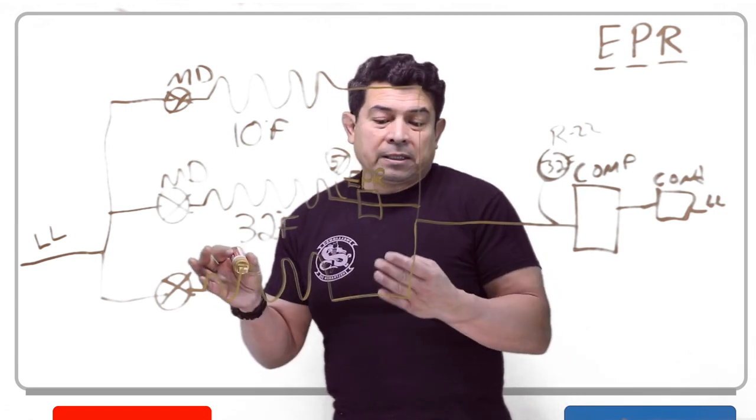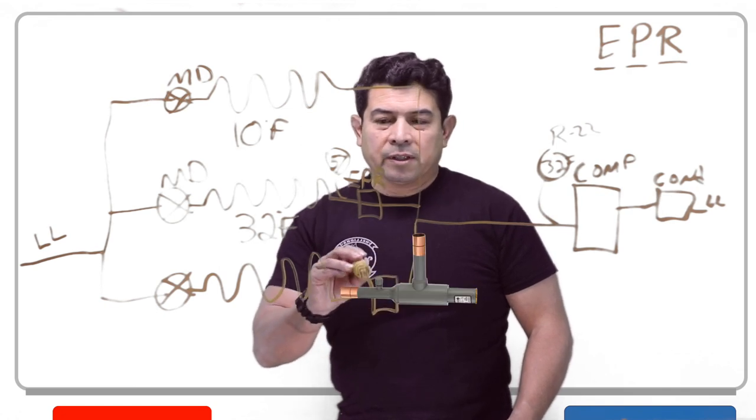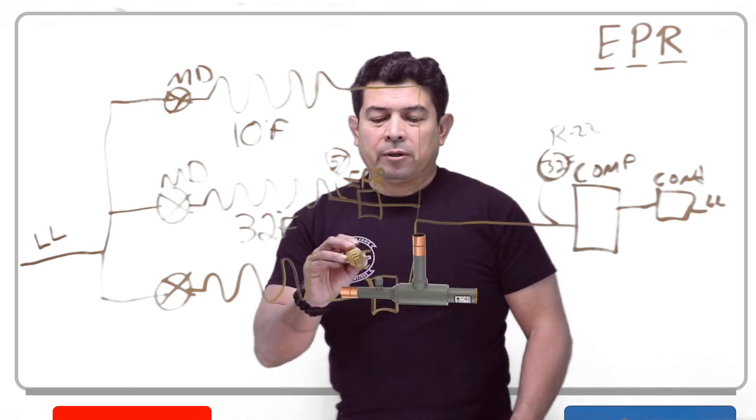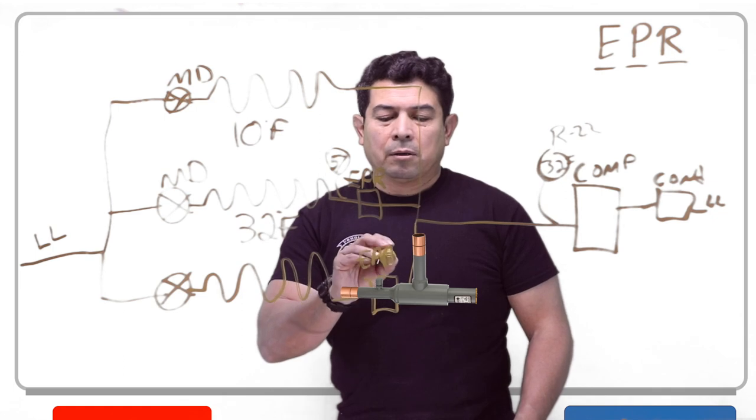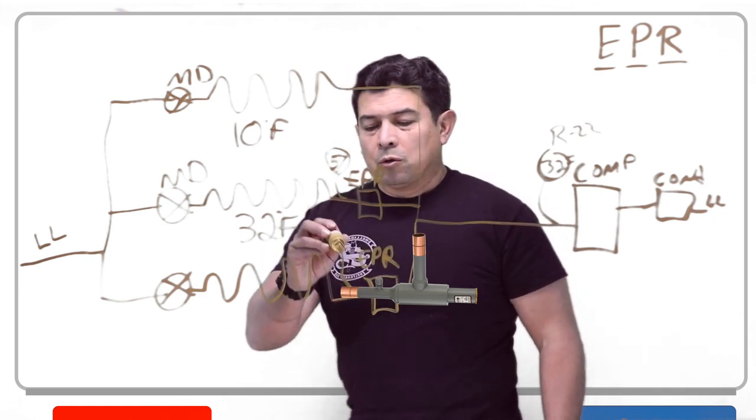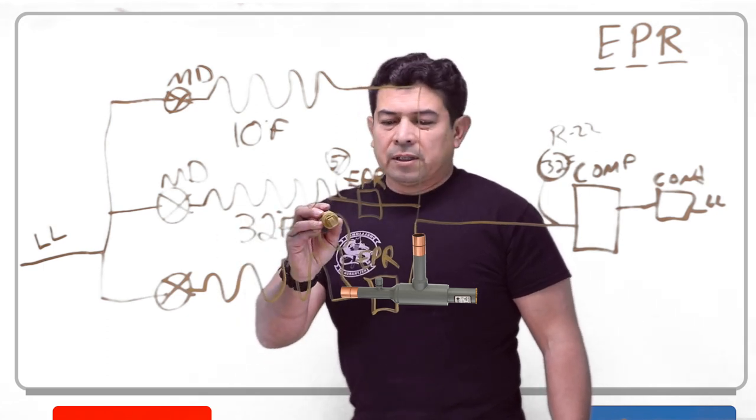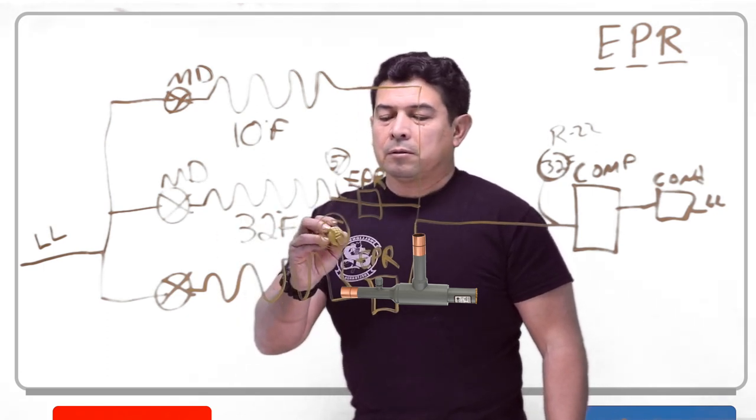But we don't want this - at least maybe we don't. In this example, we're going to put another EPR valve right there. Because we put another one, we're going to raise the pressure in this evaporator to, let's say, 68.